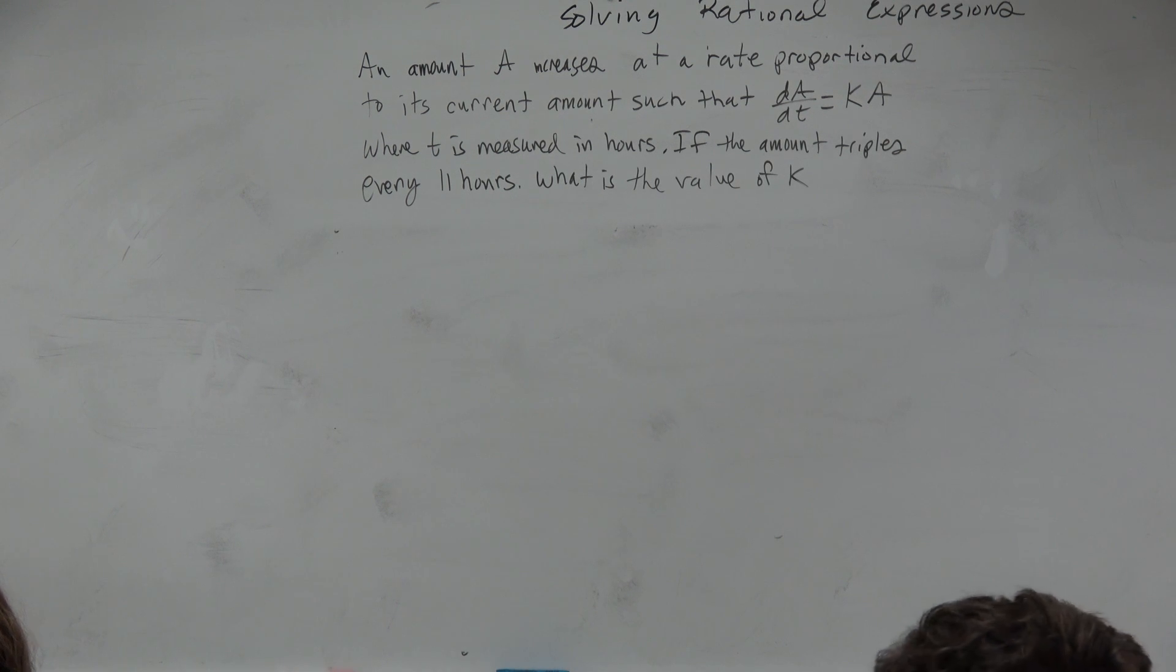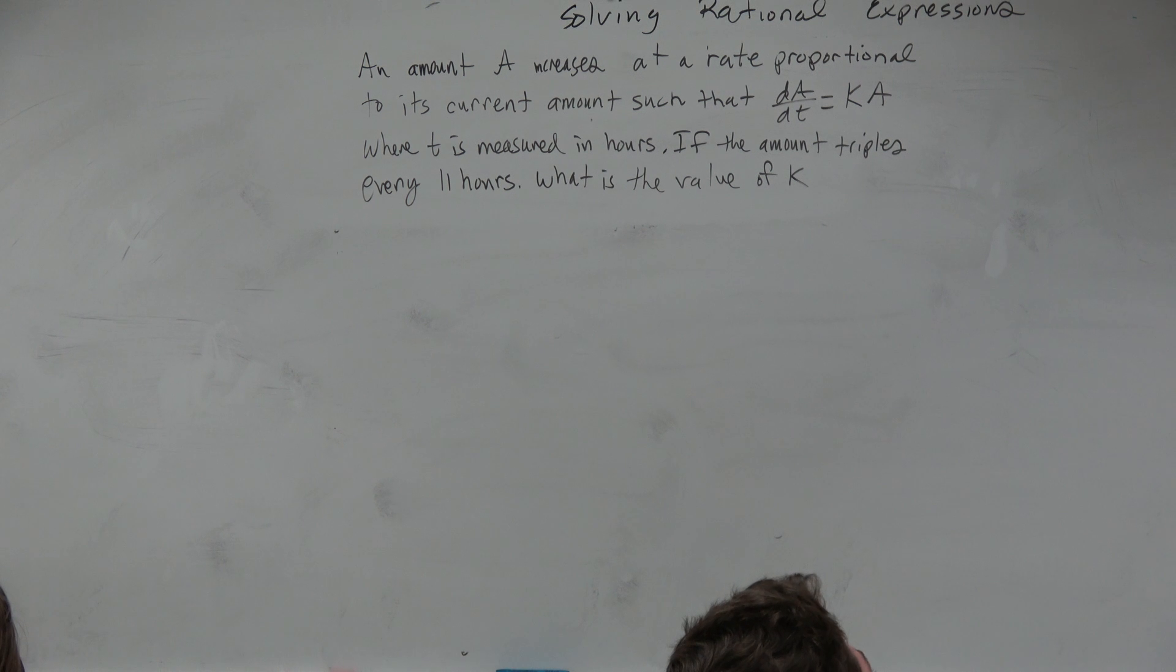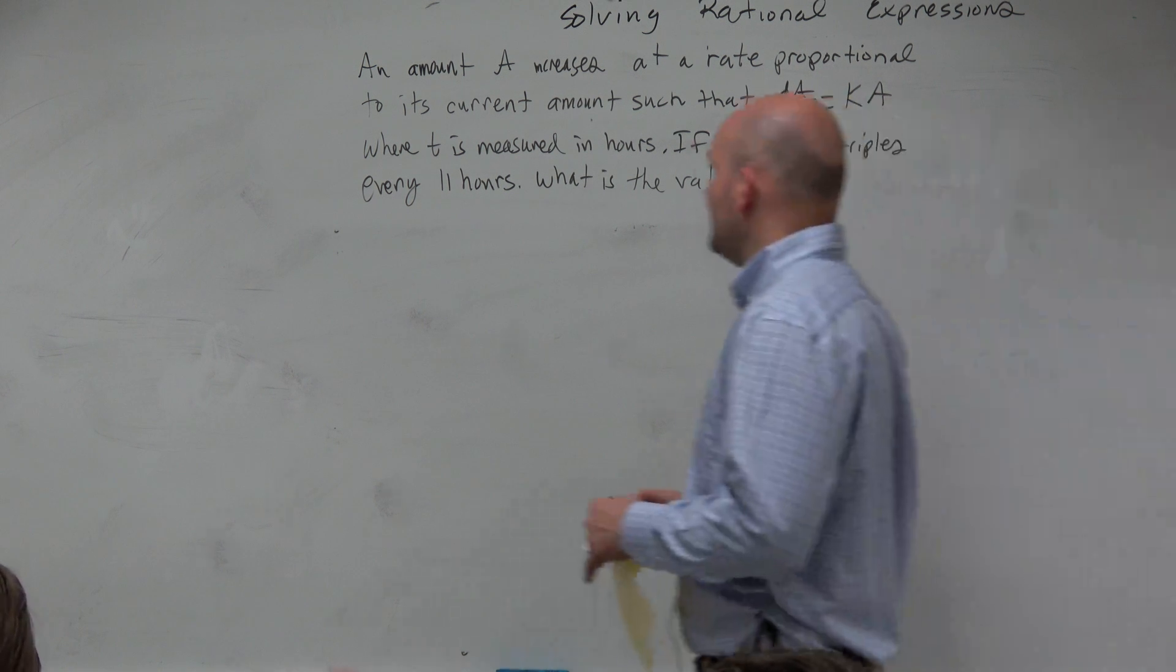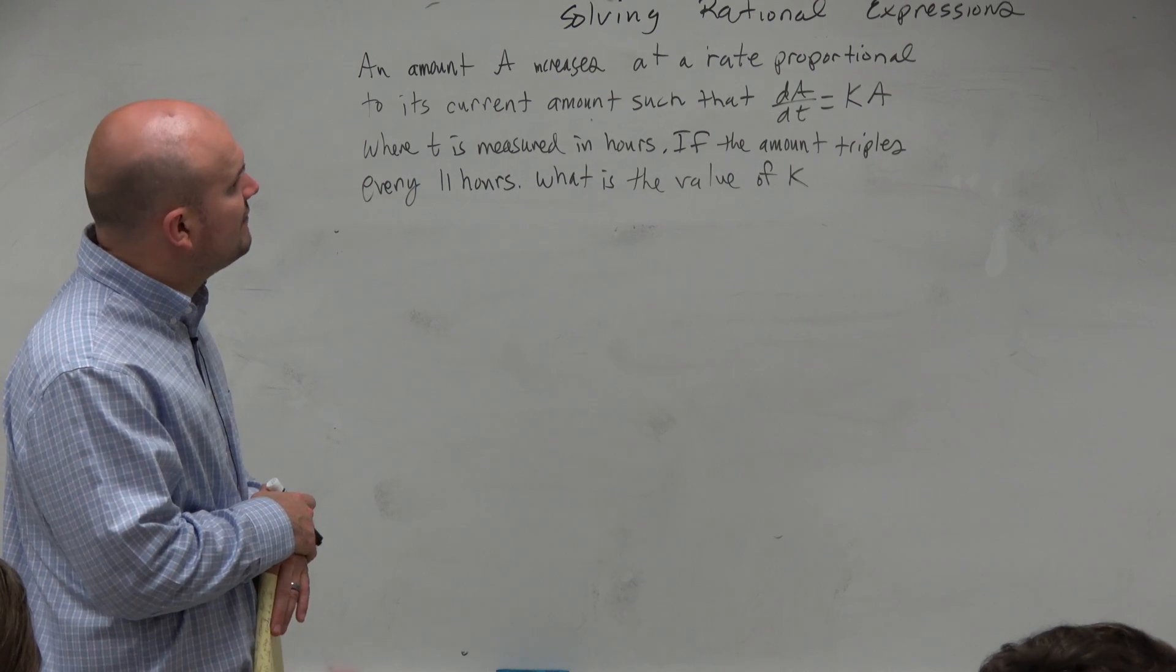So this one says, an amount A increases at a rate proportional to its current amount, such that dA/dt equals kA, where t is measured in hours. If the amount triples every 11 hours, what is the value of k?